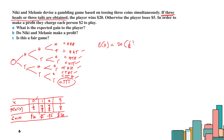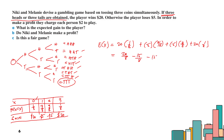Computing the expected gain: E(X) equals 20 times 1/8 plus (negative 5) times 3/8 plus (negative 5) times 3/8 plus 20 times 1/8, which equals 20/8 minus 15/8 minus 15/8 plus 20/8, giving 10/8. The expected gain is $1.25.